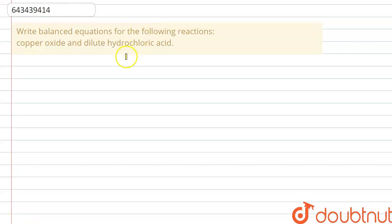Hello everyone, the question is, write balanced equations for the following reaction: copper oxide and dilute hydrochloric acid.